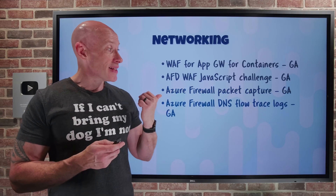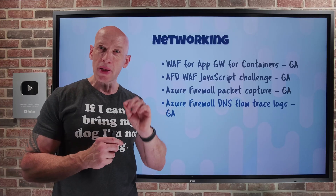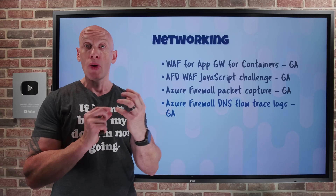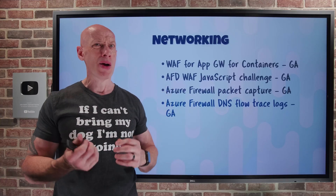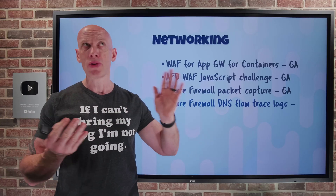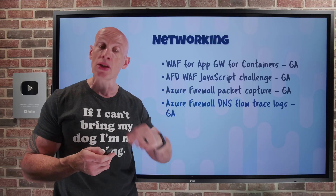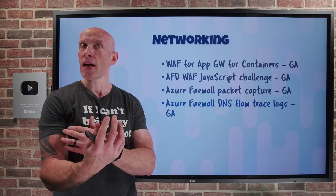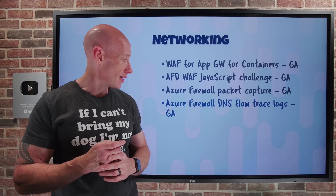Azure Firewall also now has DNS flow trace logs available in GA. Building on the DNS proxy capability of Azure Firewall, it logs associated requests including query types, query domains, response codes, upstream DNS servers, and source/destination IP — all the information you may want for investigations and understanding what's happening.